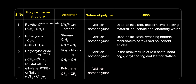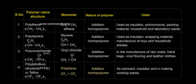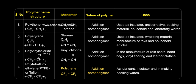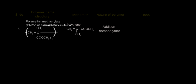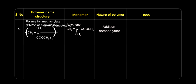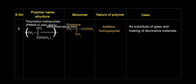Polytetrafluoroethylene (PTFE or Teflon): used as a lubricant, insulator, and in making cooking wares. Polymethyl methacrylate (PMMA or Plexiglas): used as a substitute for glass and in making decorative materials.